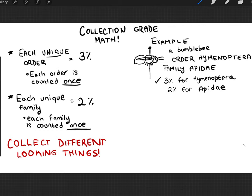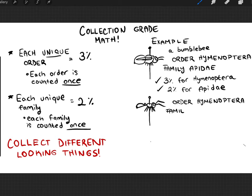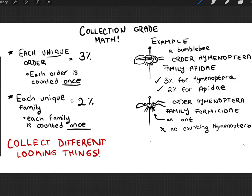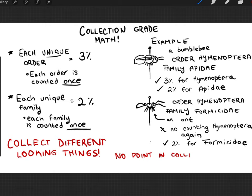Here's another Hymenoptera example — an ant. It belongs to the order Hymenoptera and the family Formicidae. This is a new family, so you get another 2%. All ants belong to the same family, Formicidae, so you only need to collect one ant. You don't get another 3% for Hymenoptera since you've already earned that, but you do get 2% for Formicidae. The point is there's no value in collecting a ton of ants or bumblebees — it's wasteful. Collect many different families.